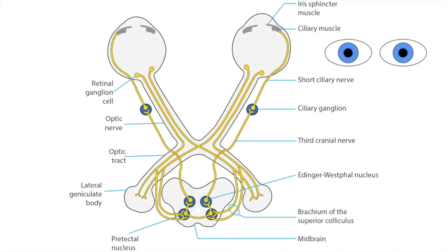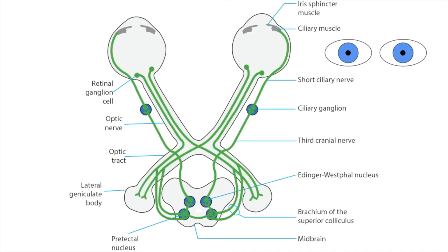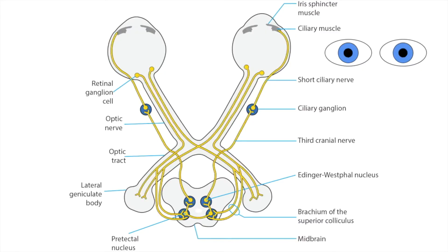The parasympathetic pupil pathway governs pupil constriction. It has an afferent and an efferent loop.